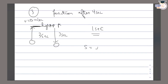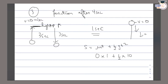Using s = ut + ½gt² again for the downward journey: at the highest point the initial velocity is 0, time is 1 second, g is +10 (ball coming down, gravity in same direction). So s = 0×1 + ½×10×1² = 5 meters. The ball falls 5 meters in that 1 second.